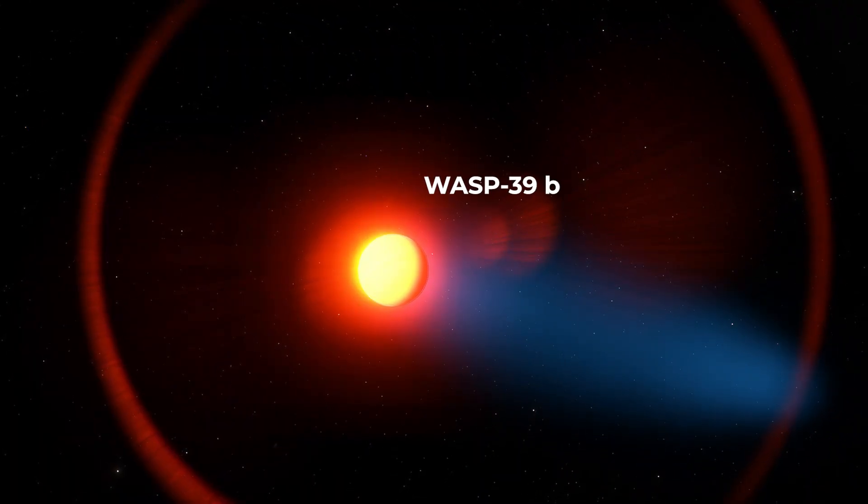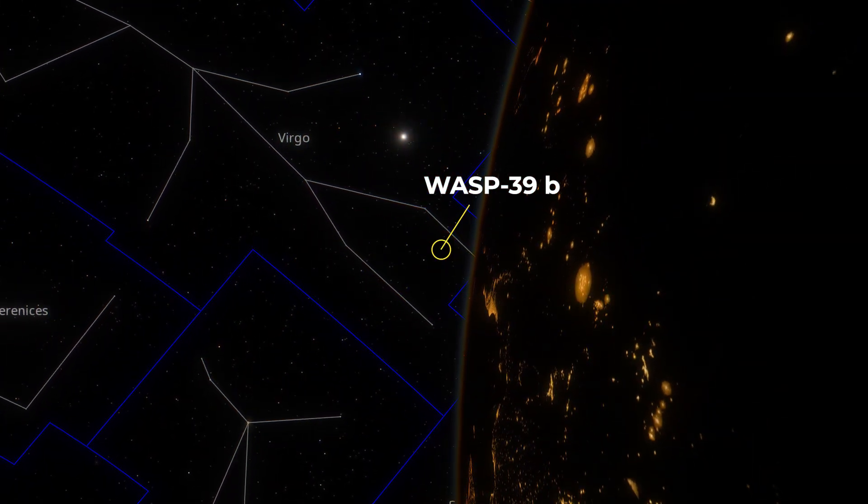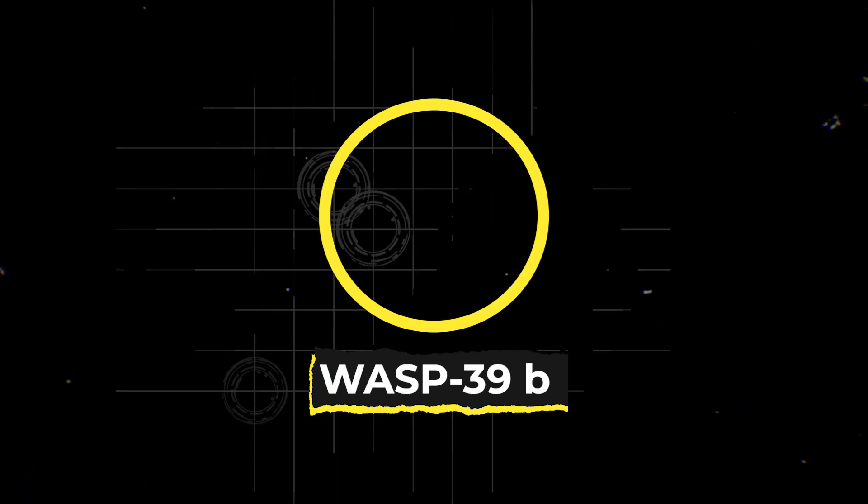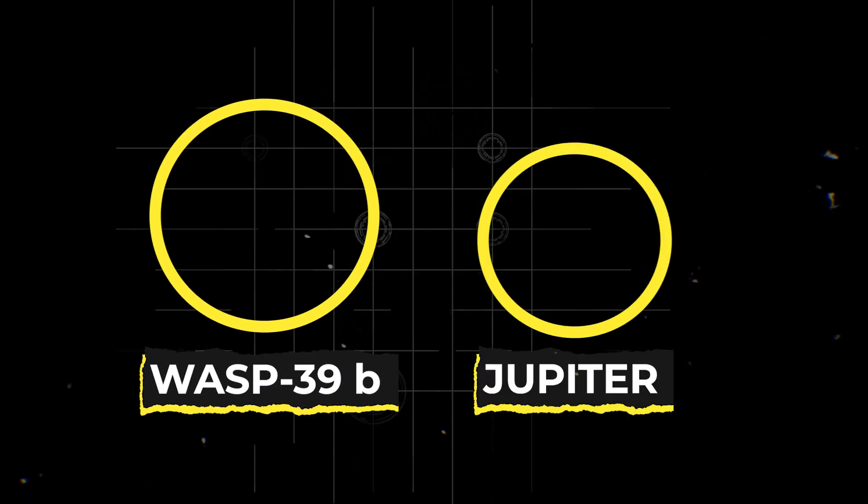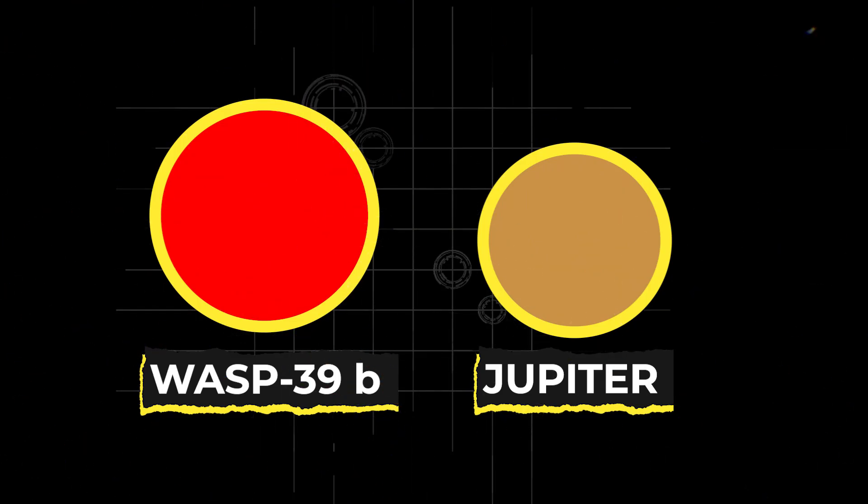This one is WASP-39b, a hot gas giant about 700 light-years away from us in the Virgo constellation. WASP-39b is 1.3 times larger than Jupiter but has a mass about a quarter that of Jupiter and about the same as Saturn.